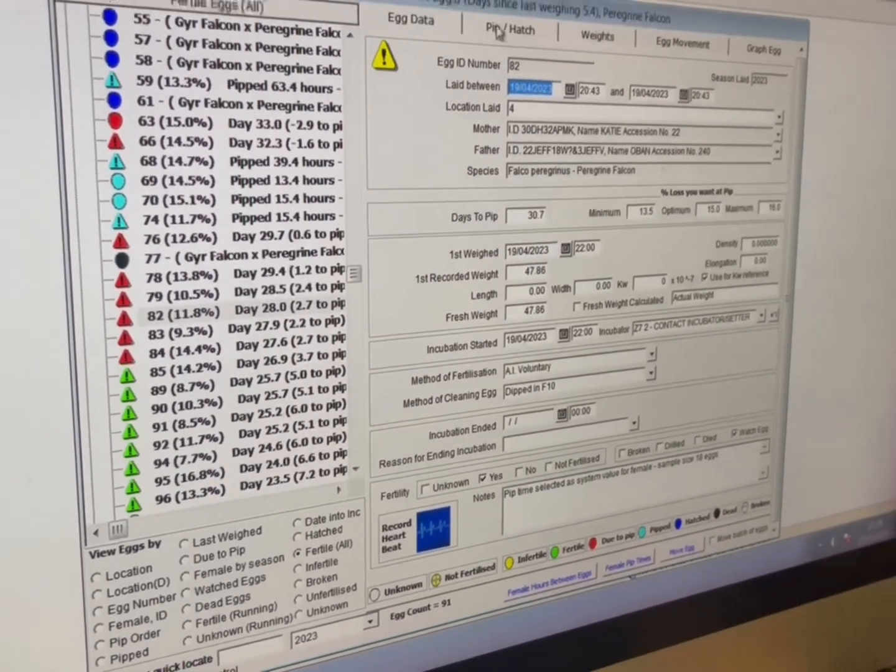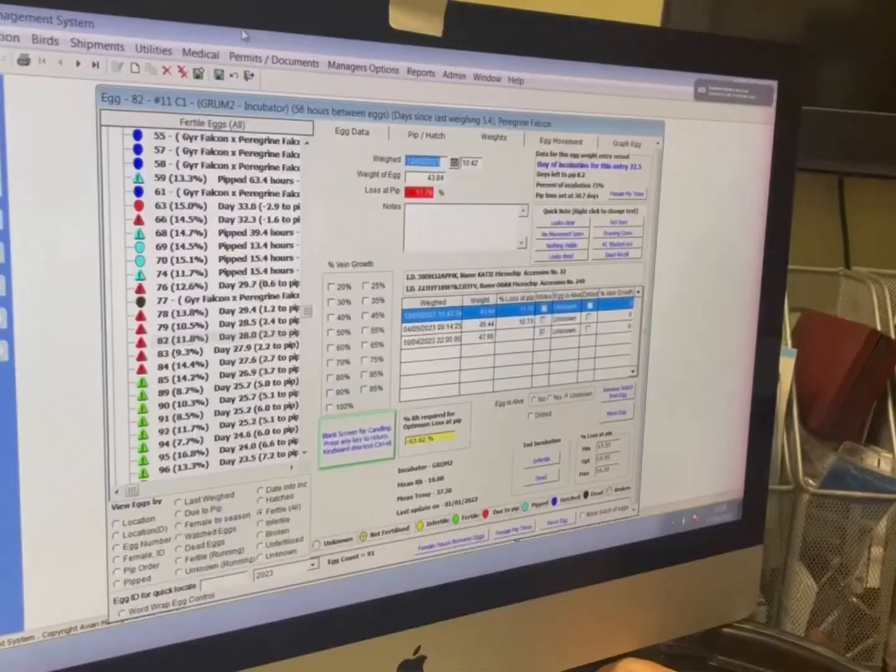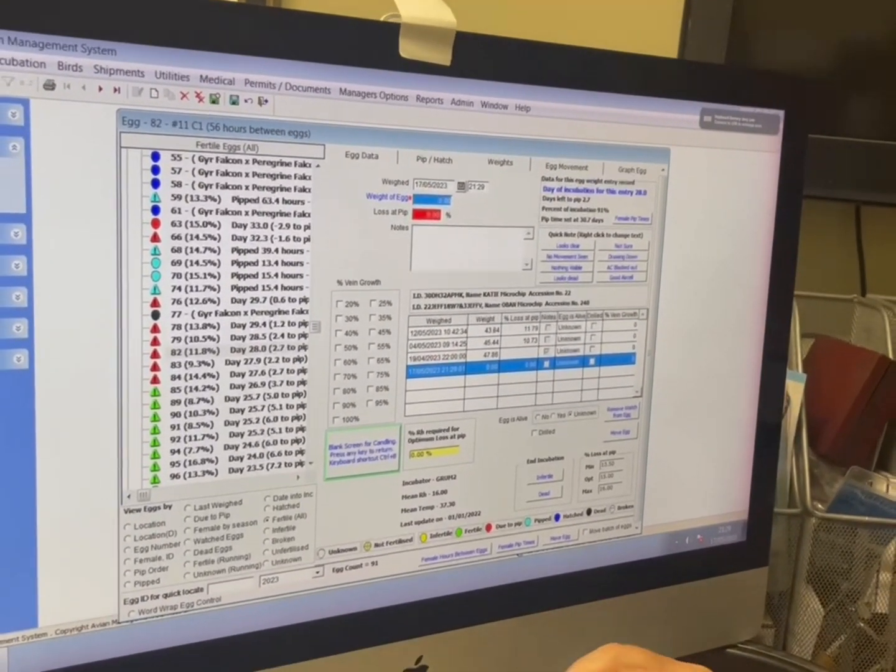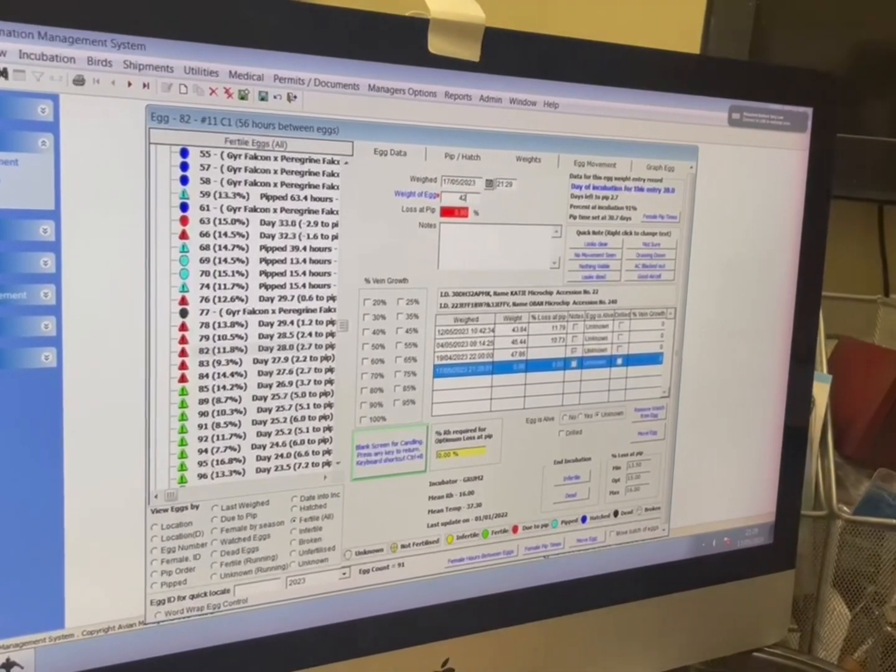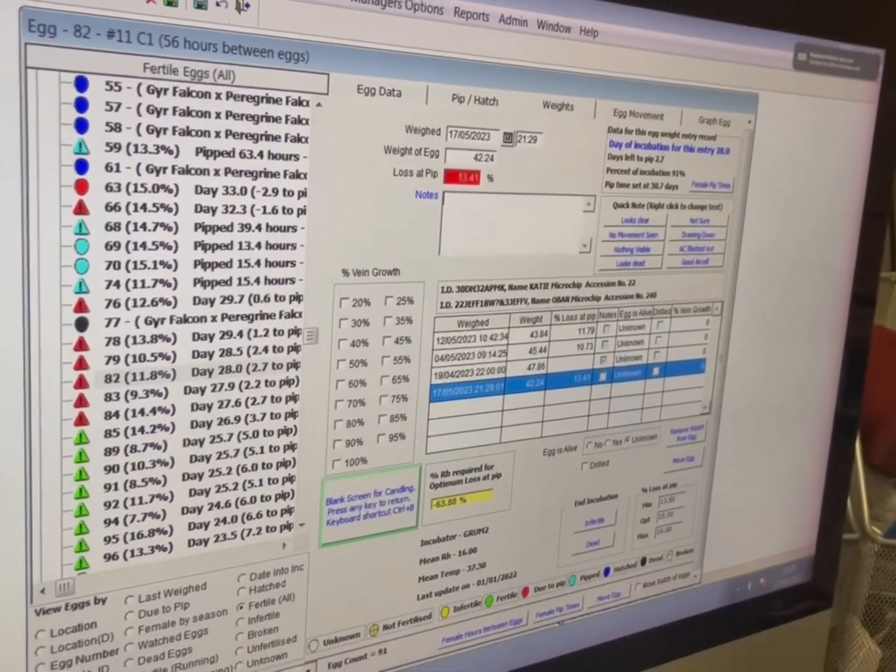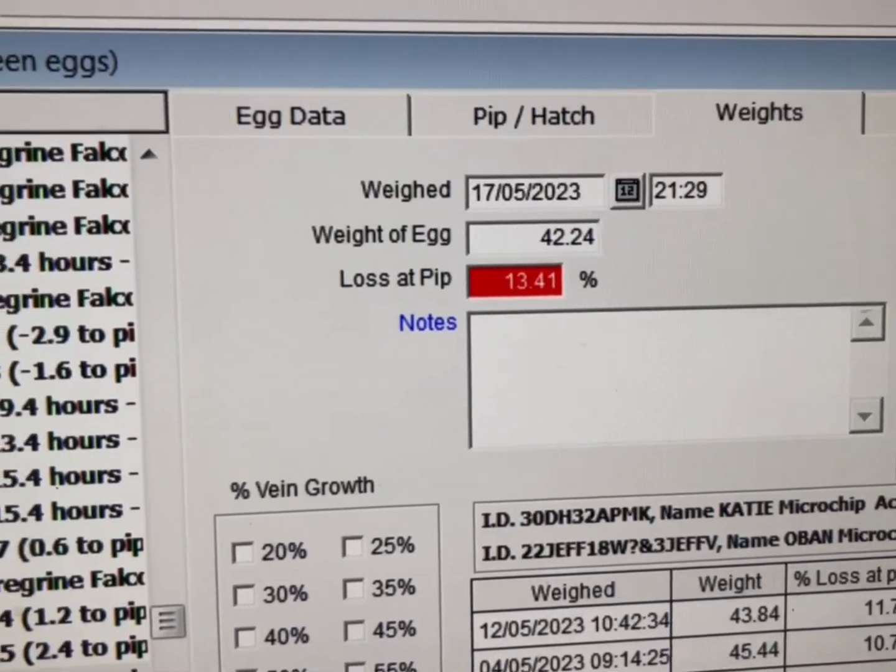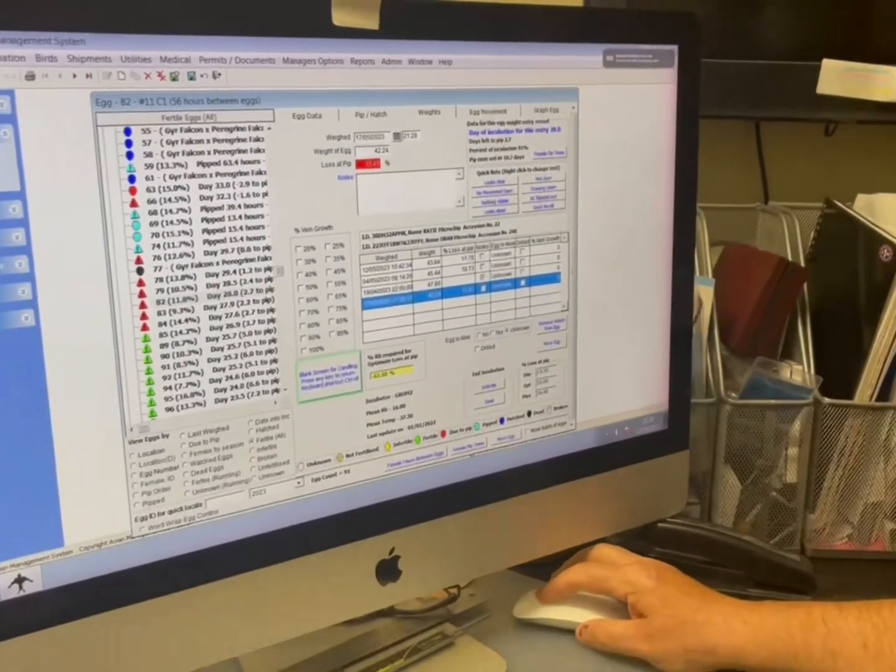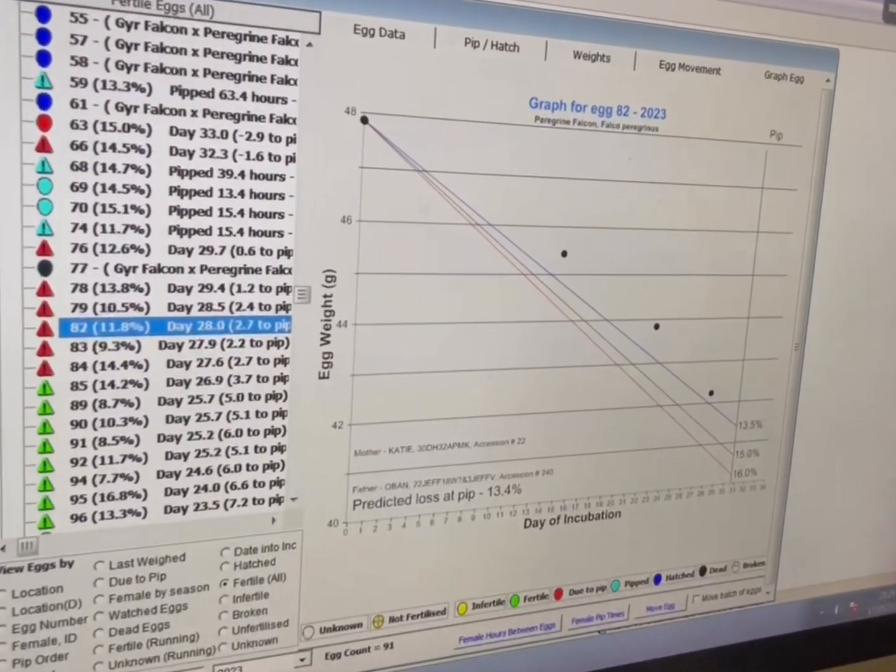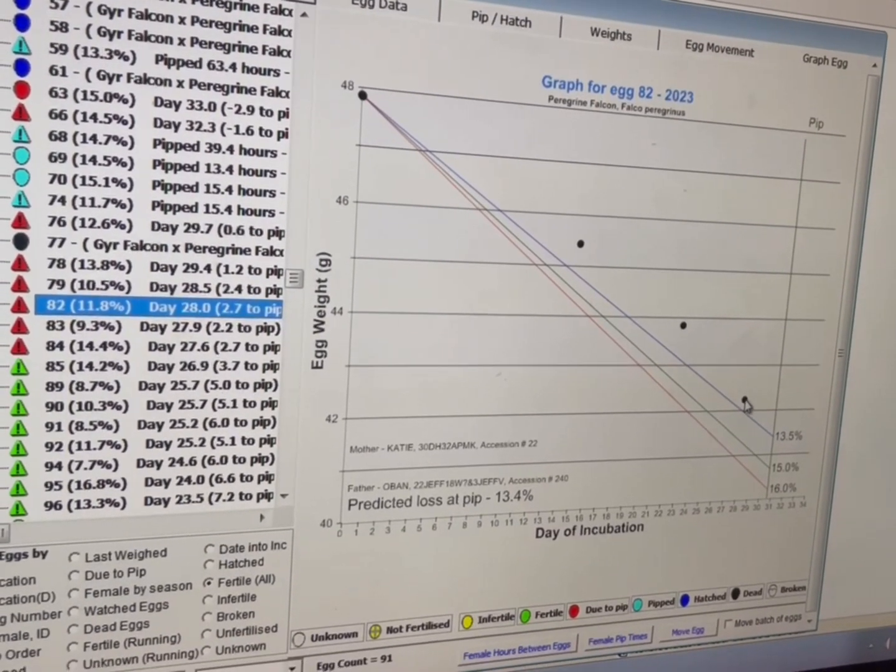So crack on, put the weight in. This is egg 82. So you put in new and then you click on there and then it's 42.24. Now then, so there you go. That egg, if you can see, is running high and it's highlighted in red. Right, I'm going to flip that across to the graph. There's the graph.